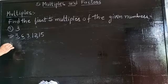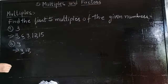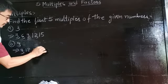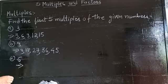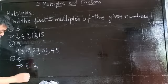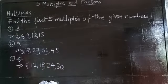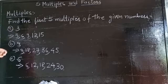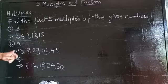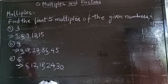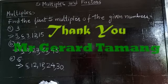Now the first five multiples of 9: 9 ones are 9, 9 twos are 18, 9 threes are 27, 9 fours are 36, 9 fives are 45. And for 6: 6 ones are 6, 6 twos are 12, 6 threes are 18, 6 fours are 24, 6 fives are 30. So the first five multiples of 9 are 9, 18, 27, 36, 45, and for 6 they are 6, 12, 18, 24, 30. This is how you find the first five multiples of any given number.